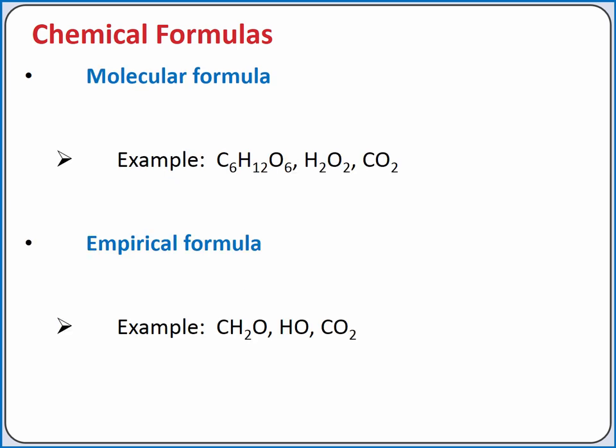The molecular formula indicates the actual number of atoms of each element in one molecule of a compound. For example, glucose is C6H12O6. So one glucose molecule has six carbon atoms, twelve hydrogen atoms, and six oxygen atoms. Hydrogen peroxide is H2O2, and carbon dioxide is CO2.